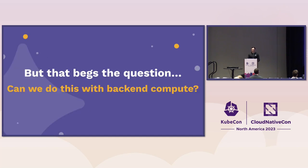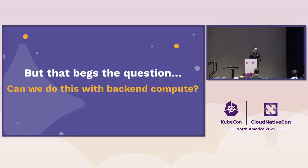That begs the question: why can't I just distribute my back end everywhere? What if I could just run the actual hosting part of my server on all of these different edge nodes? What if I could cache that close to the user and not care about the deployment target, because it's just a little static file? So can we do this with back end compute?